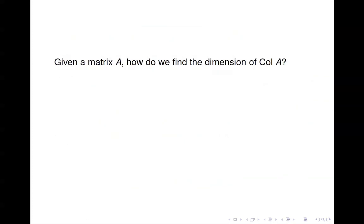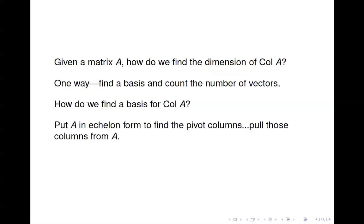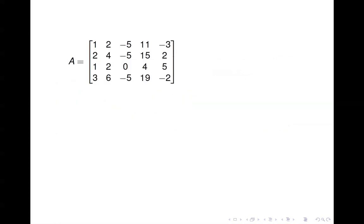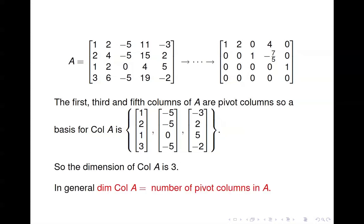For a given matrix A, how do we find the dimension of the column space of A? We find a basis and count the vectors. We put A in echelon form to find the pivot columns, then pull those columns from the original matrix A — not the echelon form — and that's our basis. For this example, the first, third, and fifth columns are pivot columns, so we pull those from A. That gives a basis for the column space, and with three vectors in the basis the dimension of the column space is three. In general, the dimension of the column space equals the number of pivot columns.